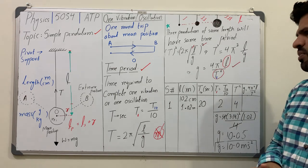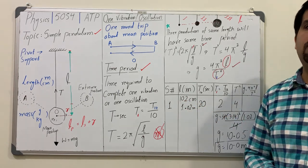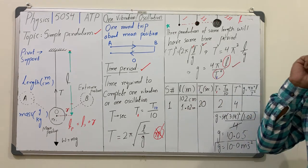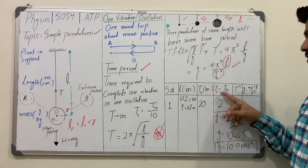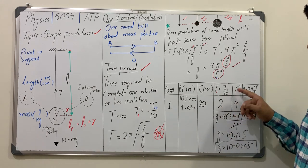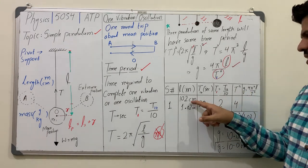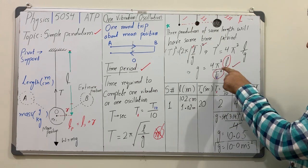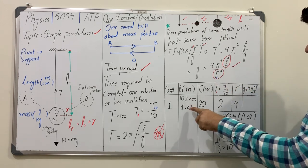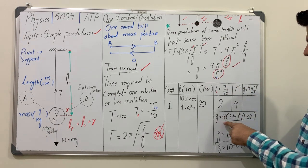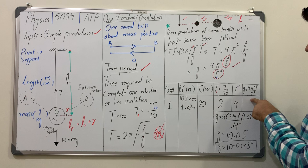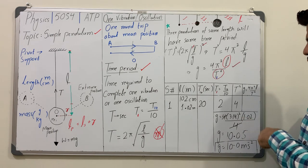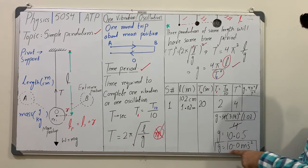With T equals 2 seconds, T² equals 4. Substituting into g equals 4π²L over T²: g equals 4 times (3.14)² times 1.02 divided by 4. The two fours cancel, leaving (3.14)² times 1.02. Multiplying gives 10.05, which rounds to 10.0 meters per second squared — confirming the value of acceleration due to gravity calculated using the simple pendulum experiment.